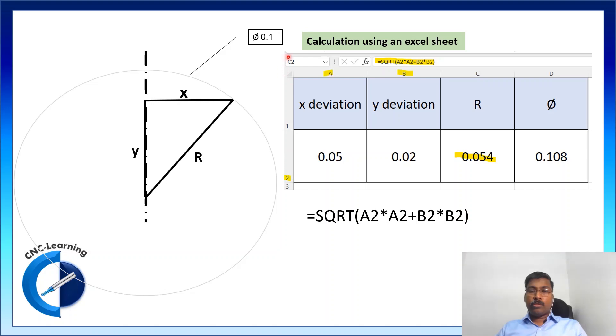Now, using a simple Excel file, we can calculate this for different x and y. So, in one cell, a2 in this example, we can take x deviation and b2 in this example, you can take y deviation.